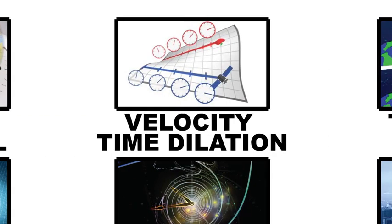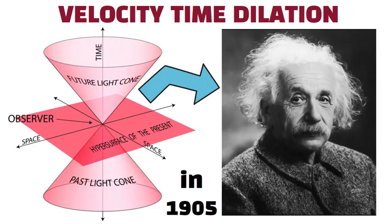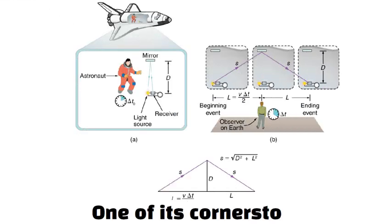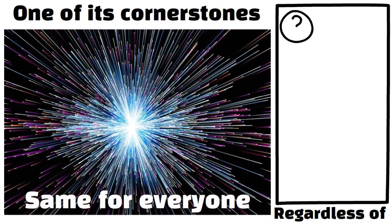Velocity time dilation. Special relativity, introduced by Albert Einstein in 1905, focuses on inertial frames, observers moving at constant speeds in straight lines. One of its cornerstones is that the speed of light is the same for everyone, regardless of how fast they move.